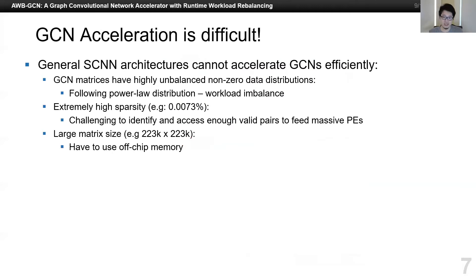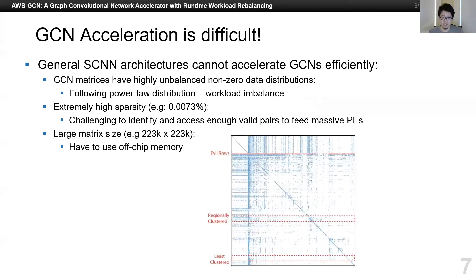So there are three major characteristics I have to talk about. First, the matrices of GCN, especially the adjacency matrices, can have highly unbalanced non-zero distribution. The distribution can follow a power law, as shown in this figure. Non-zeros can be originally clustered — most rows are almost but not totally empty, with non-zeros at random positions. Some rows can, however, be very dense, dominating the entire calculation process. We call these rows 'evil rows' in our paper and in this talk. This may cause workload imbalance, resulting in low utilization of the overall system.